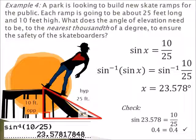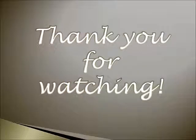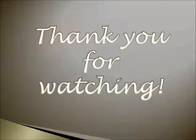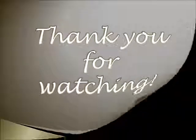In order to check your work you can take the degrees that you found and substitute back in for x. So sine of 23.578 is roughly 0.4, and 10 divided by 25 is also 0.4, so therefore you know you did it correctly. Thank you for watching and I hope this clarifies basic trig functions of sine, cosine, and tangent. Please watch other videos for further support.